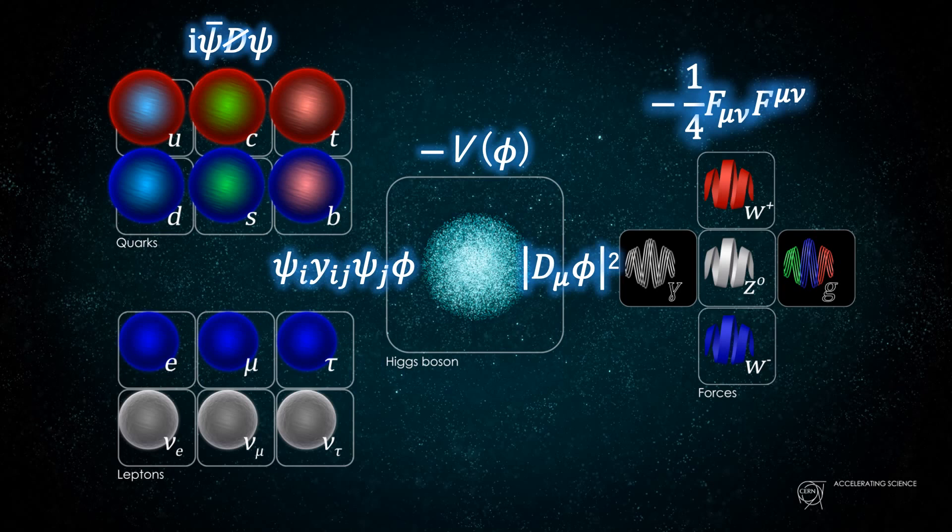Currently, the hunt is on for theories which go beyond the standard model of particle physics to incorporate dark matter and dark energy. Another shortcoming of the standard model of particle physics is the absence of a description of gravity.